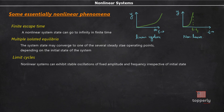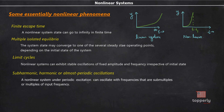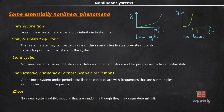The next phenomenon is sub-harmonic, harmonic, or almost periodic oscillations. A stable linear system under a periodic input produces an output of the same frequency. However, a non-linear system under periodic excitation can oscillate with frequencies that are sub-multiples or multiples of the input frequency. The next point is chaos. A non-linear system can have complicated steady-state behavior that may not be in equilibrium, periodic, or almost periodic oscillations. Some of these chaotic motions appear random although the system may seem deterministic.